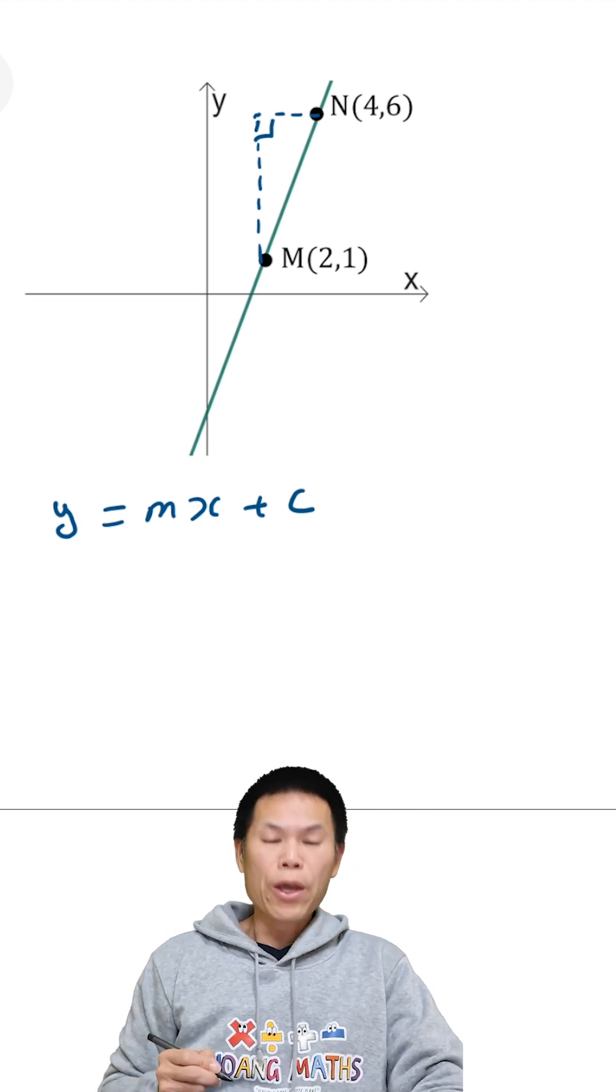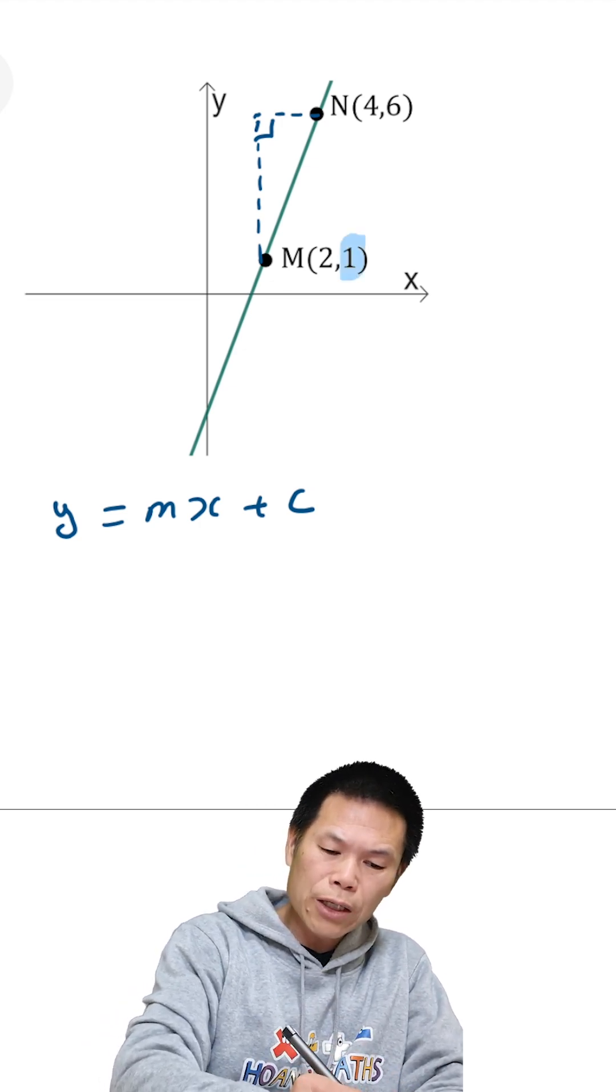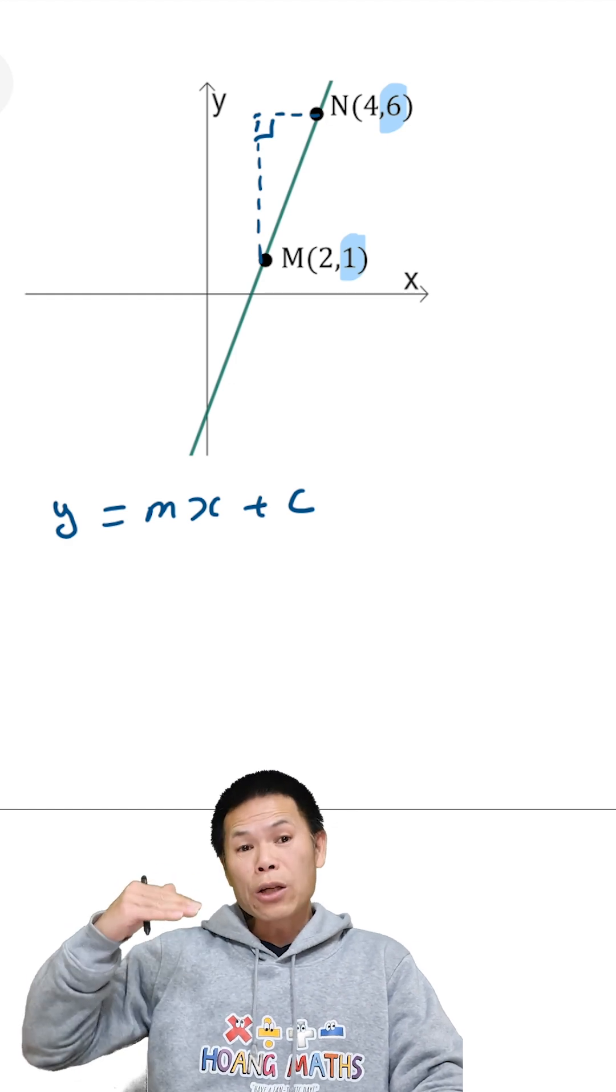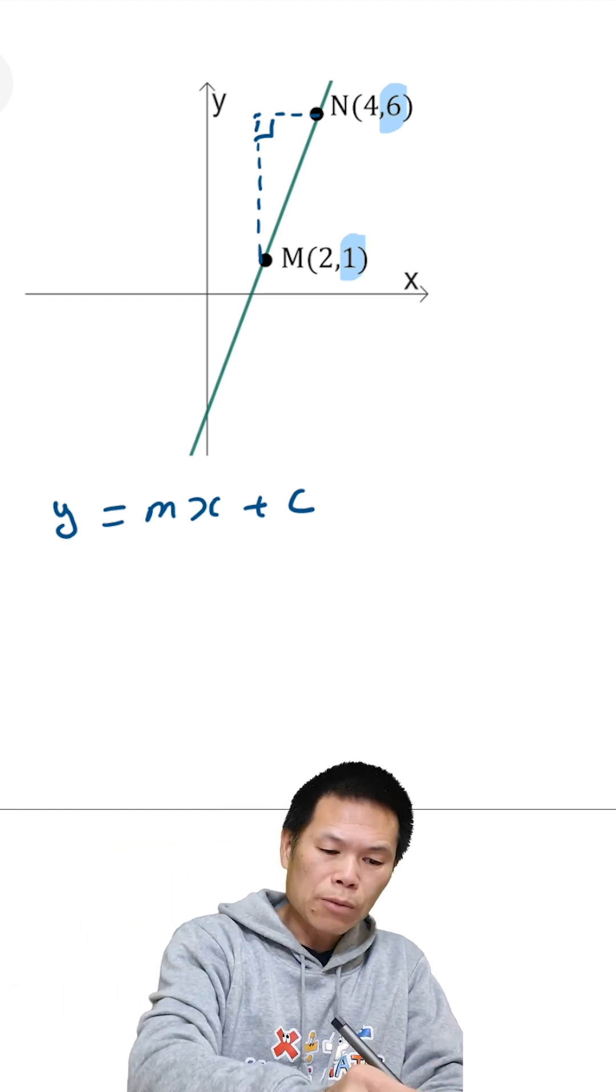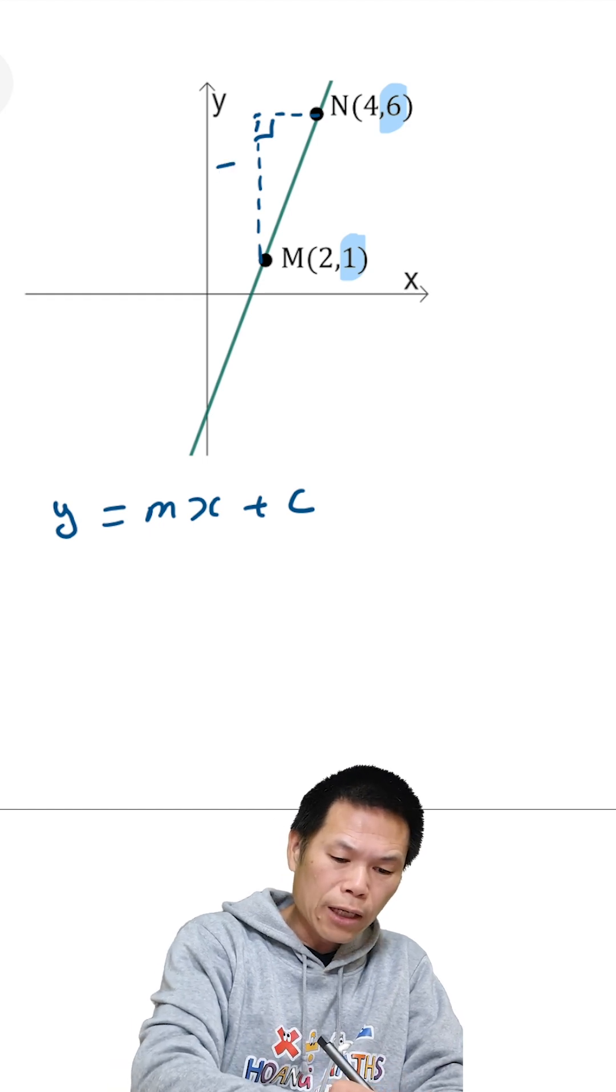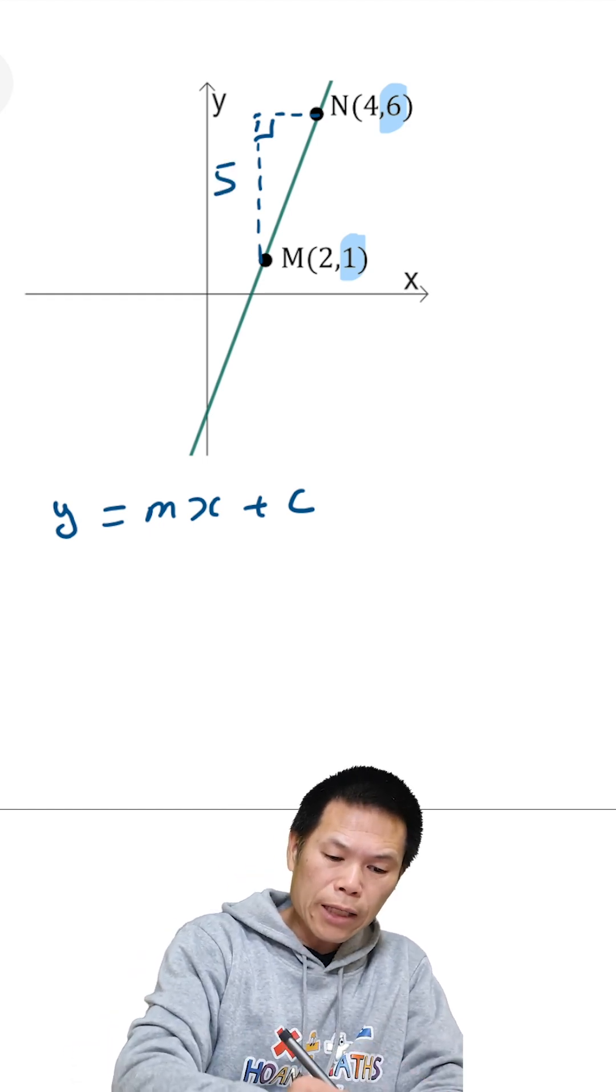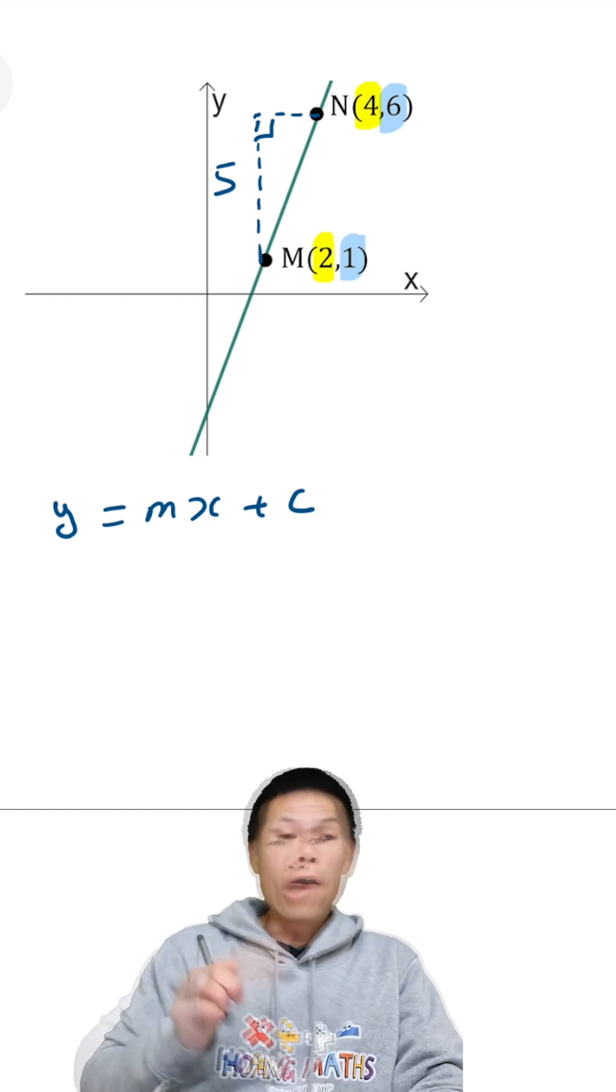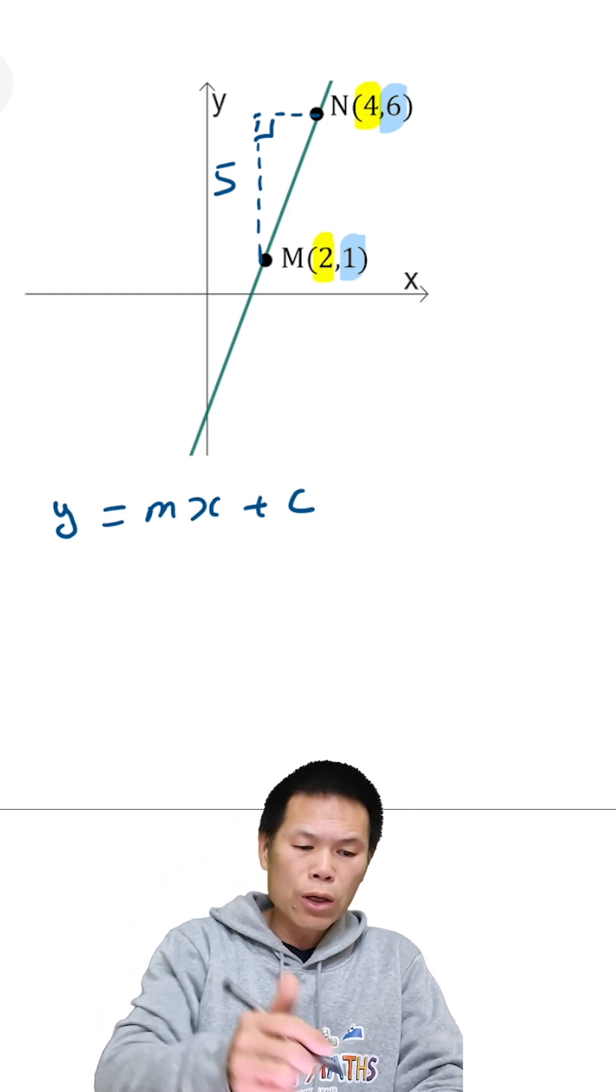So there you go. Now for rise, that is the y value, the vertical line. From one to six, that is five units, because six minus one is five. Now for the horizontal one, that is two to four, so from two to four. That is two units, because four minus two is two.